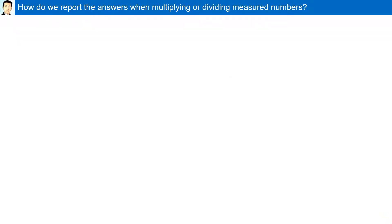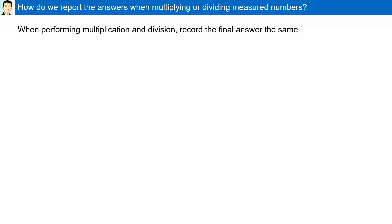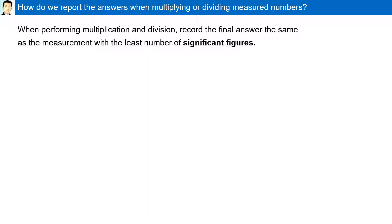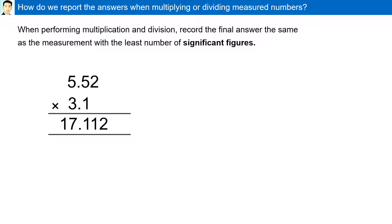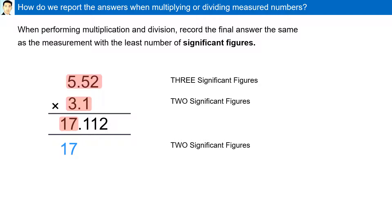When performing multiplication and division, record the final answer the same as the measurement with the least number of significant figures. Here we have 5.52 (3 significant figures) multiplied by 3.1 (2 significant figures). The rule states we must go to the least number of significant figures, so our final answer should have 2 significant figures: 17.